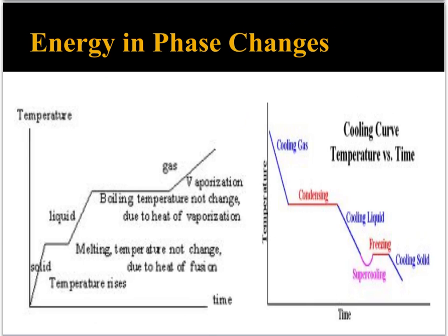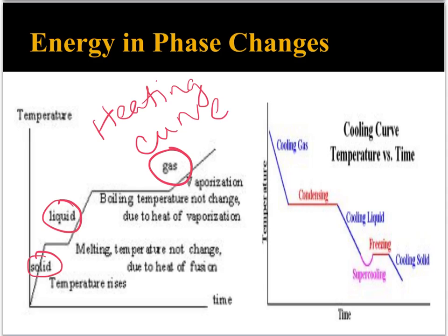We're going to look at energy in physical processes. When looking at phase changes, we're looking at two different kinds of curves: a heating curve and a cooling curve. Heating curves and cooling curves always follow the same pattern. You plot temperature versus time, and what's going on is phase change — a substance going from solid to liquid to gas, or from gas to liquid to solid. You should notice that they're the exact opposite of each other.